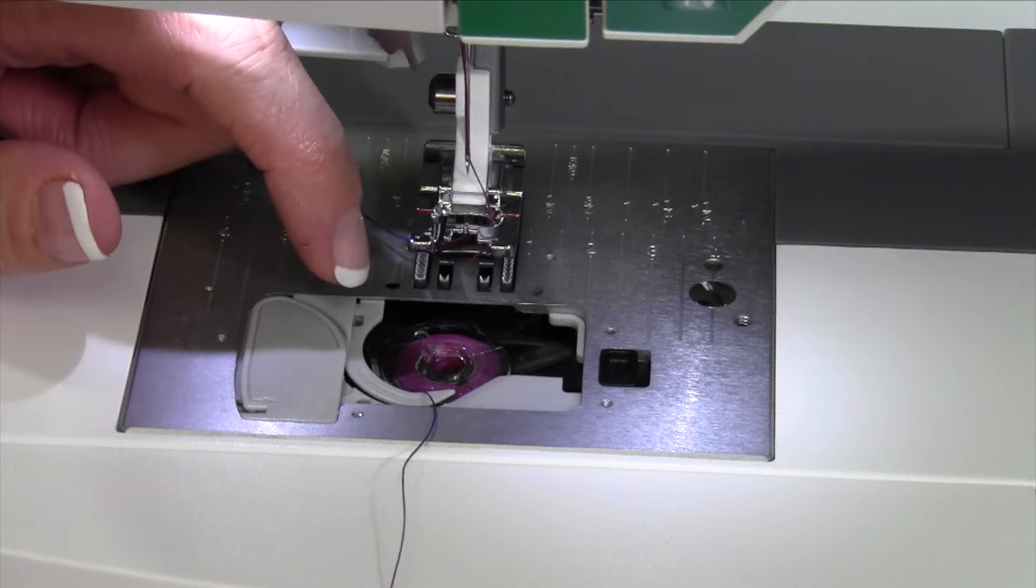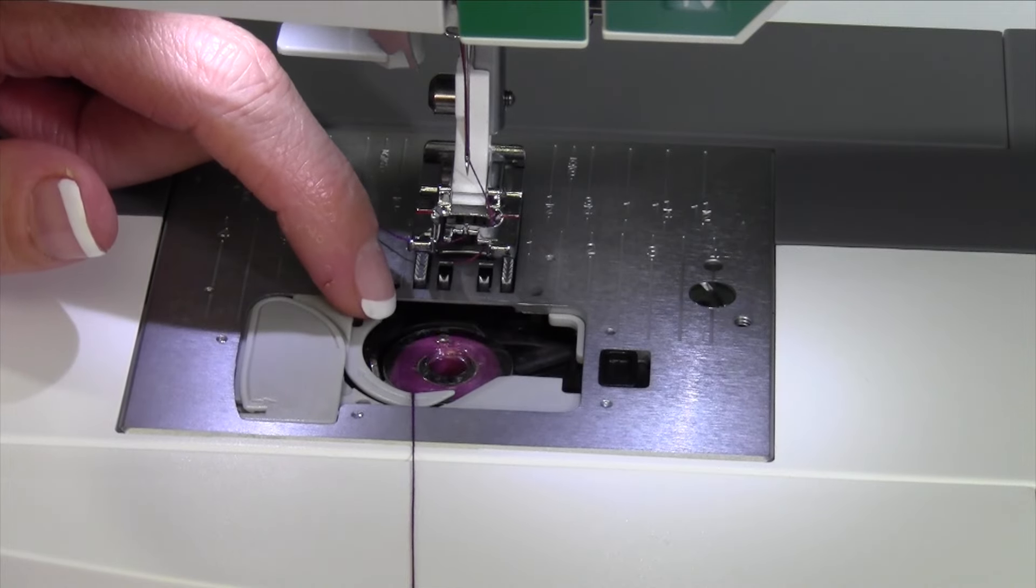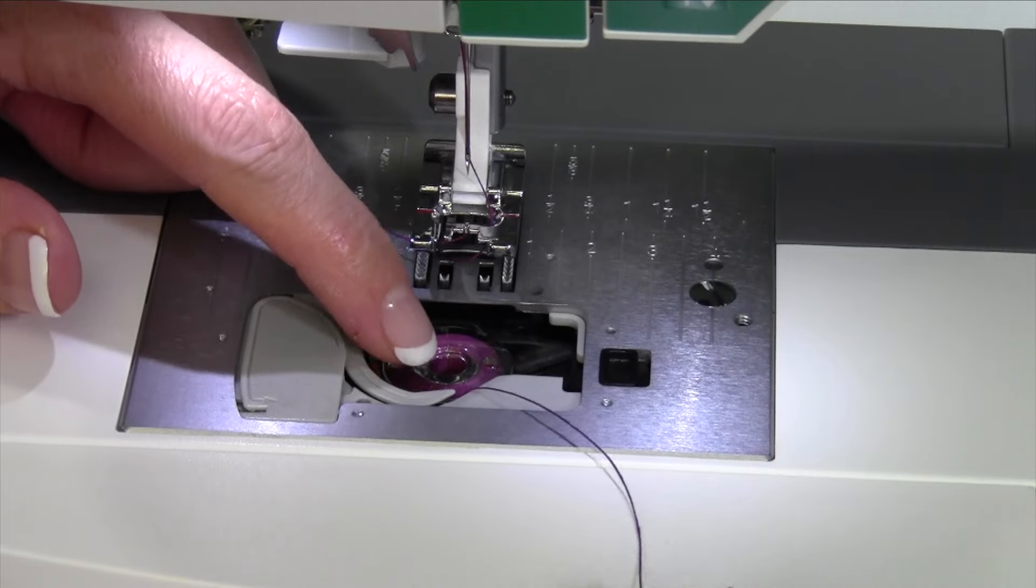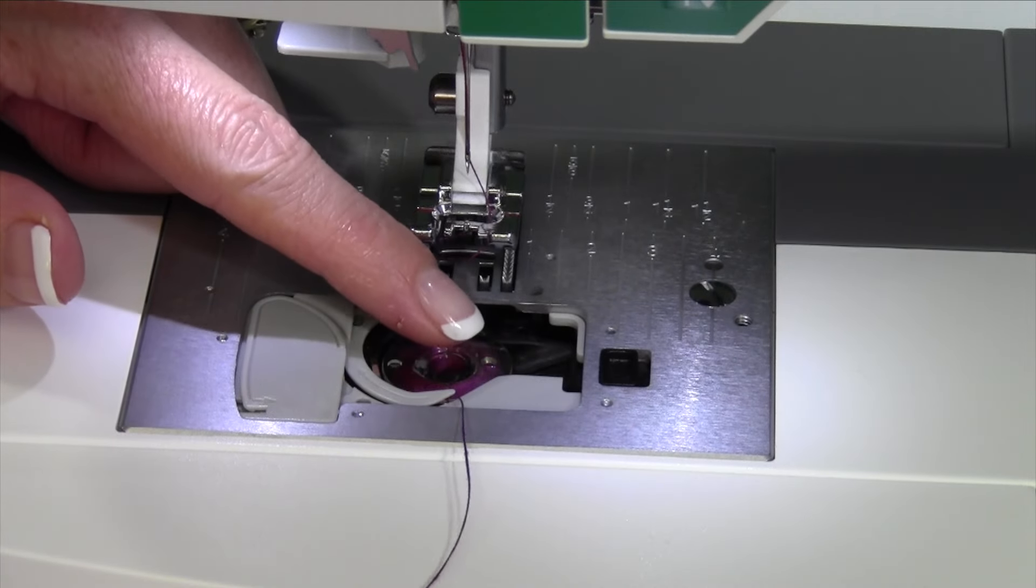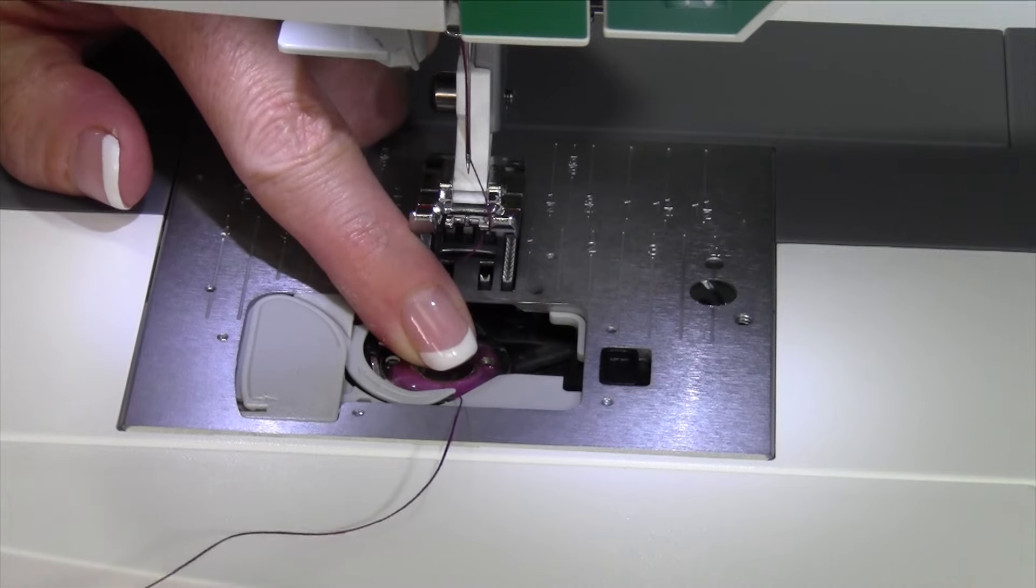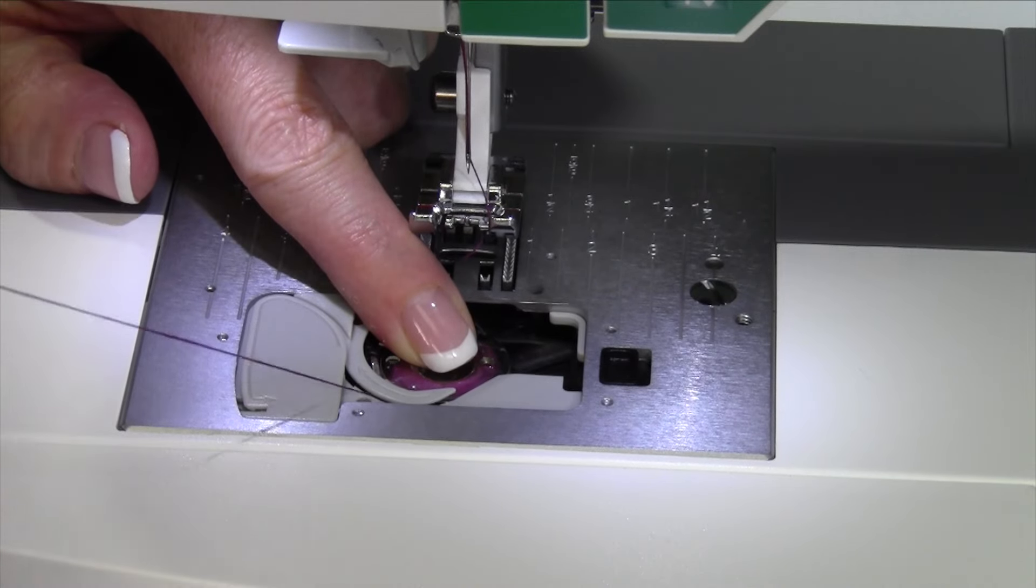As it drops in, you're going to notice that bobbin will spin counterclockwise there. Then just take the thread. There's a little arrow here for a groove. As you put it in there, if you get in the good habit of actually putting your finger on this bobbin and then pulling on this thread,